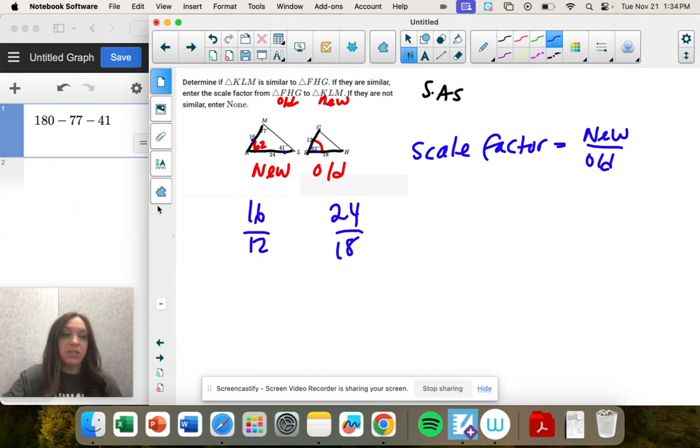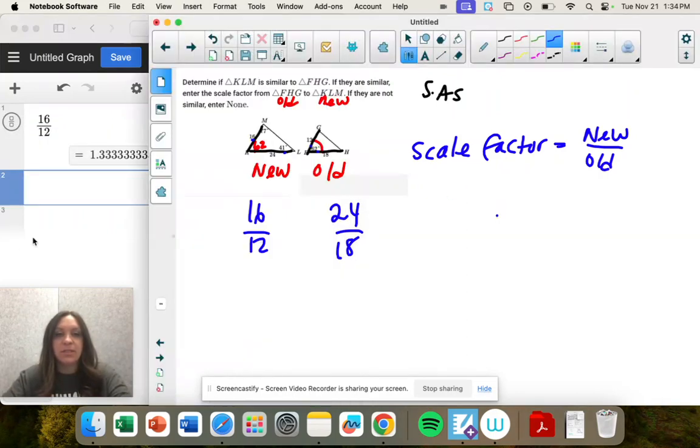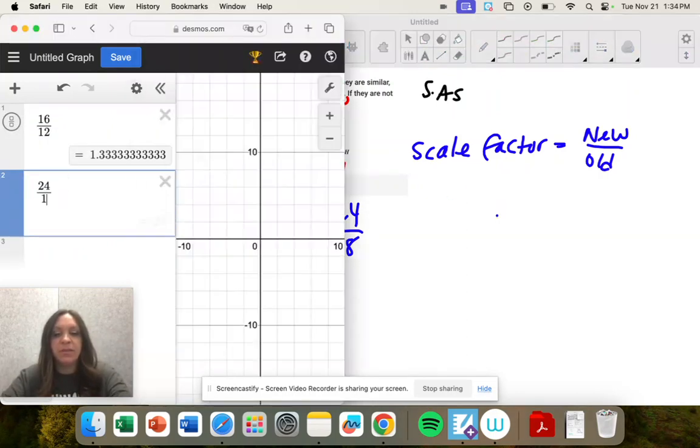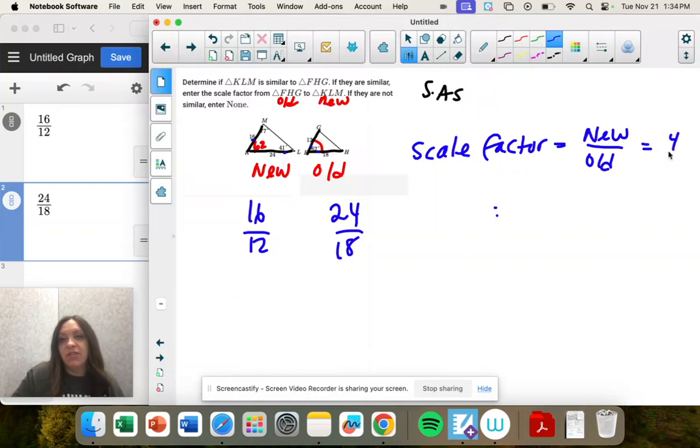If those are the same, that's going to be our scale factor. 24 over 18. And they are, yay. I'm going to make those fractions. They're 4/3, which is our scale factor, and they are similar by side-angle-side.